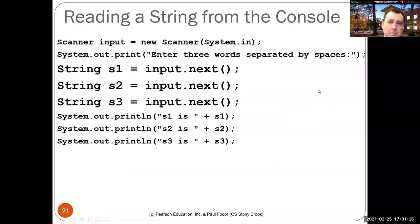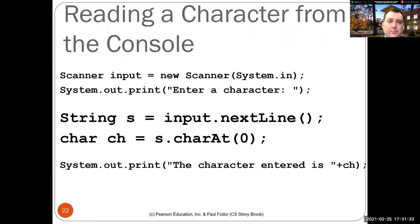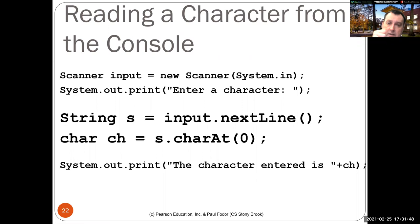nextLine() is better because you read everything line by line with nothing left in the pipeline. To read a single character from the console, read the entire line then take charAt(0) — there is no scanner method to read a single character directly from the command prompt.